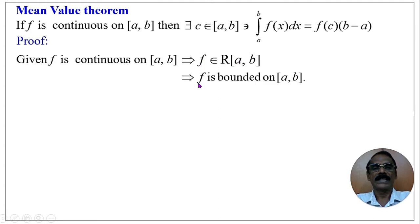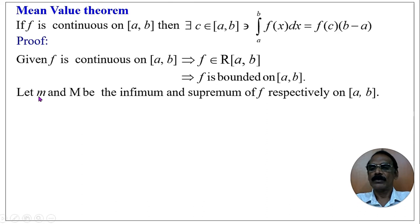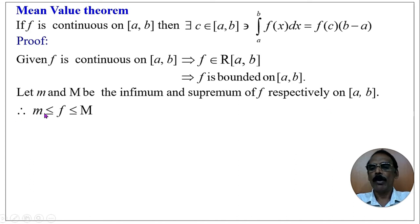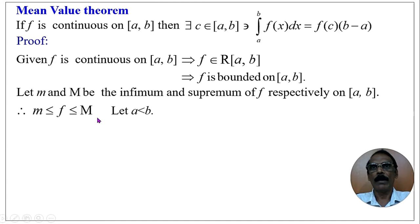Since f is Riemann integrable, the function f is bounded on the closed interval [a, b], because every Riemann integrable function is bounded. Let small m and capital M be the infimum and supremum of the function f respectively on [a, b]. Therefore, m ≤ f ≤ M, that is, f takes every value from small m to capital M on the closed interval [a, b].